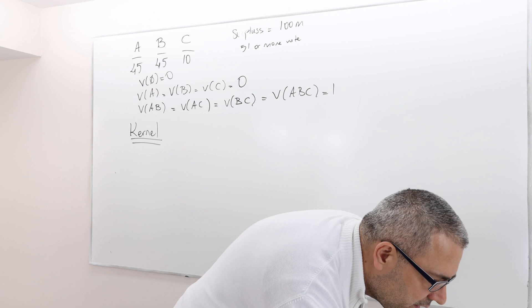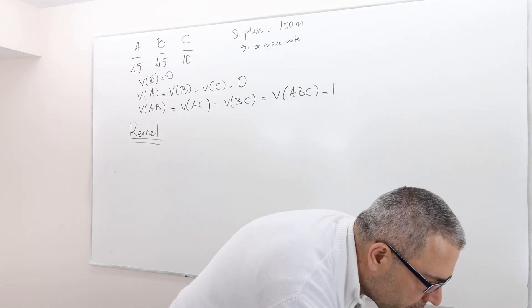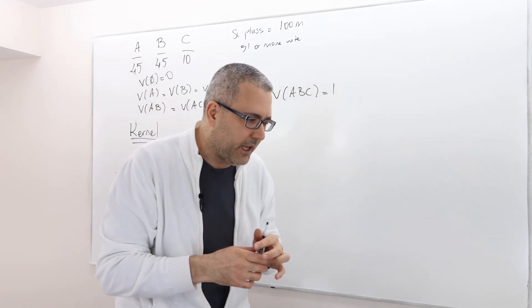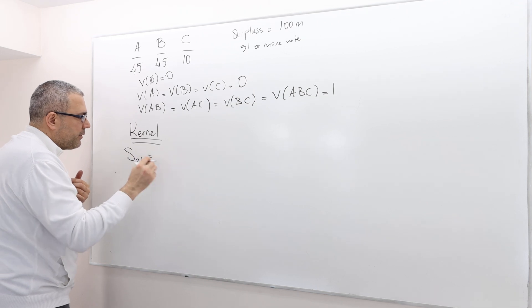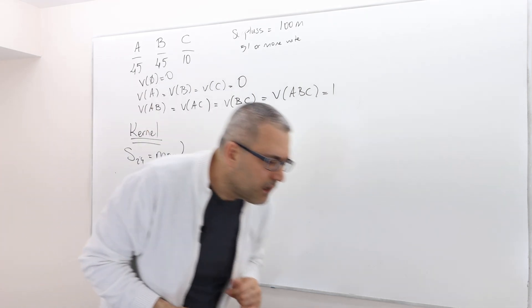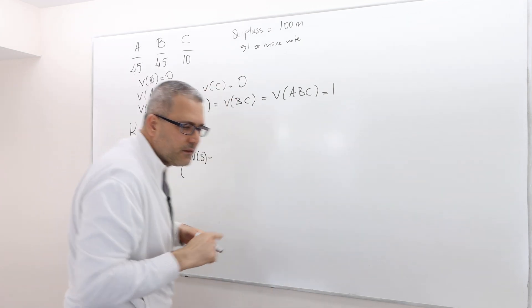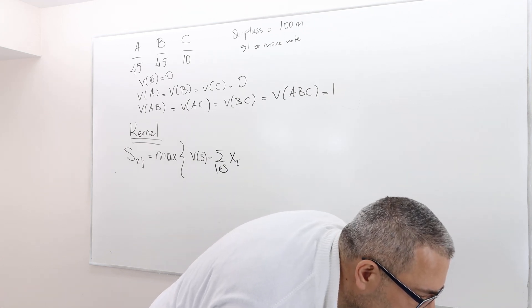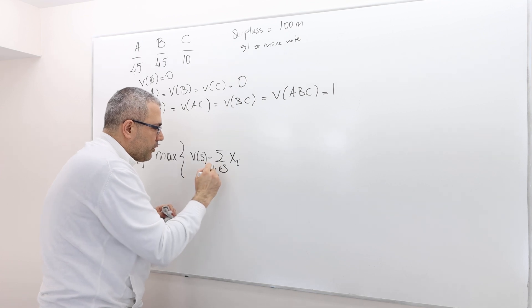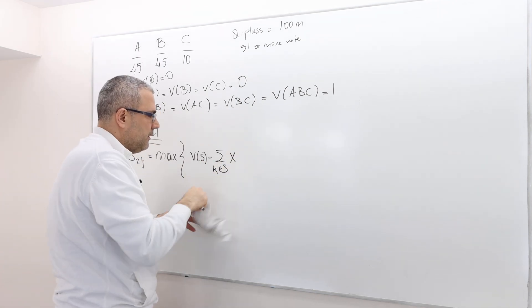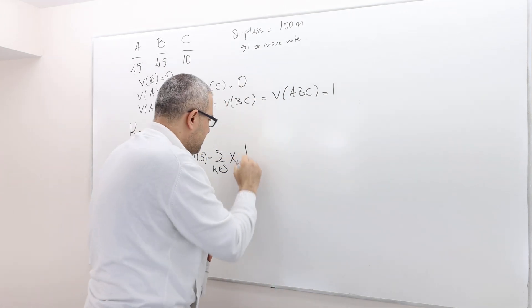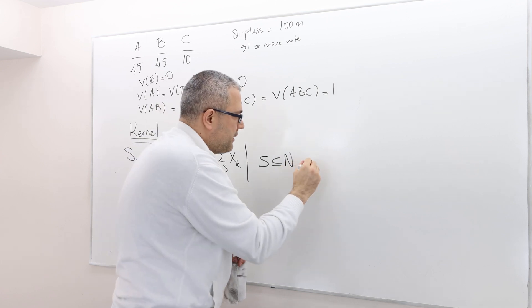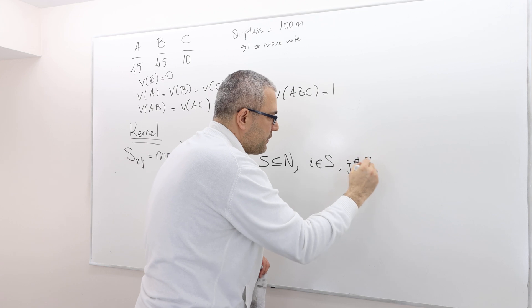You have to calculate what's called a player's bargaining power, or the surplus of player i over player j. So we call it Sij. It's the maximum of V(S) minus summation of xk, where k is from coalition S, such that S is a subset of N. It's a coalition, but not all coalitions - i must be in this coalition and j shouldn't be in this coalition.